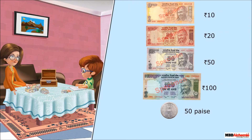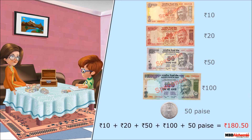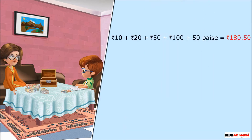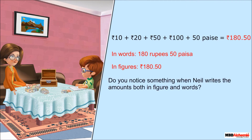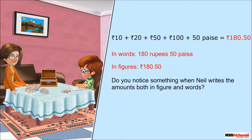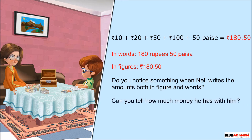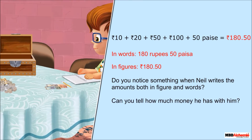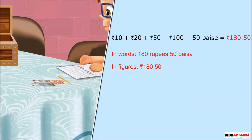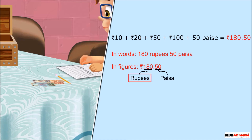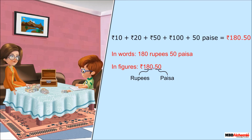Neil adds up the amount of all the notes to find out how much money his mother gave him, then writes the amount both in words and in figures. In the amount 180 rupees and 50 paise, 180 is rupees and 50 is paise. The dot separates the rupees from the paise.